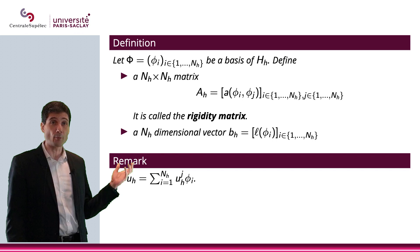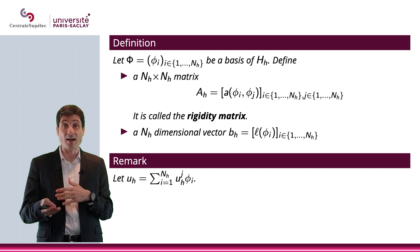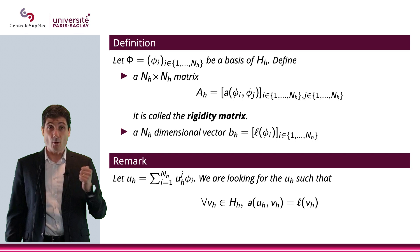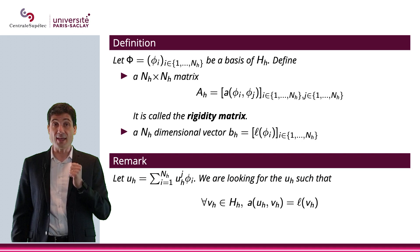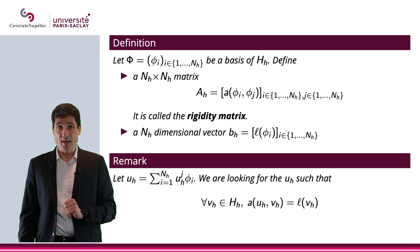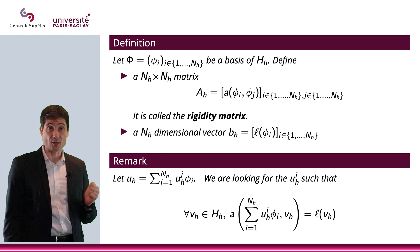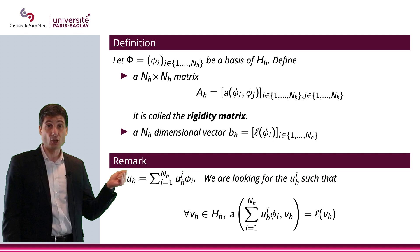Let me rewrite things this way. uₕ is basically the sum of the φᵢ multiplied by the coefficient uₕⁱ. So, what we're looking for again is uₕ, which is solution to this variational problem (VFₕ), which means that for all vₕ in Hₕ, a(uₕ, vₕ) is ℓ(vₕ). Now, as we said, looking for uₕ is the same as looking for the uₕⁱ. And let me actually replace the uₕ by its decomposition on the basis. So, I have a applied to uₕ, which is now written as a sum, with vₕ equals ℓ(vₕ).